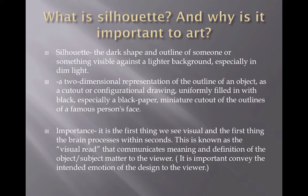What is a silhouette and why is it important to art? A silhouette is a dark shape or outline of someone or something visible against a lighter background, especially in dim lighting. Another definition: a two-dimensional representation of the outline of an object as a cutout or drawing uniformly filled in with black. Back in early animation, there was a French artist who did one of the earliest animated films as a series of black cutouts — cut out figures with little pins for the elbows — animated by taking still photos and compiling them together, before all the wonderful software we have now.